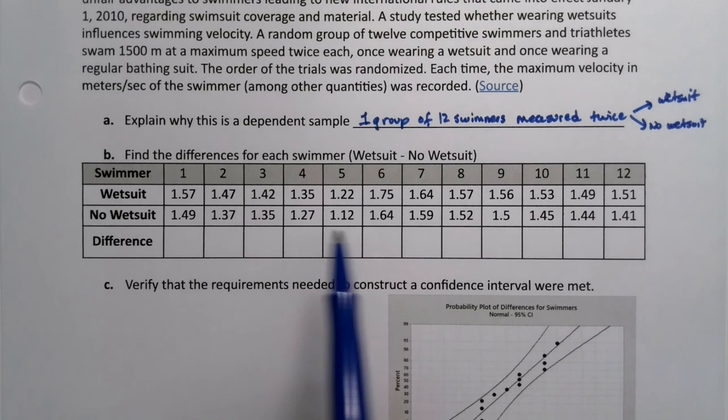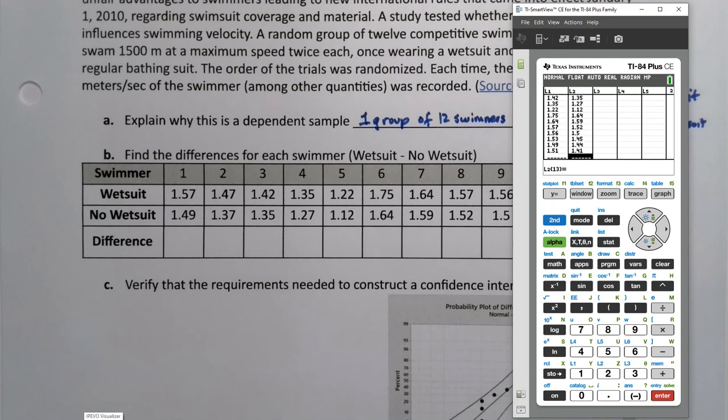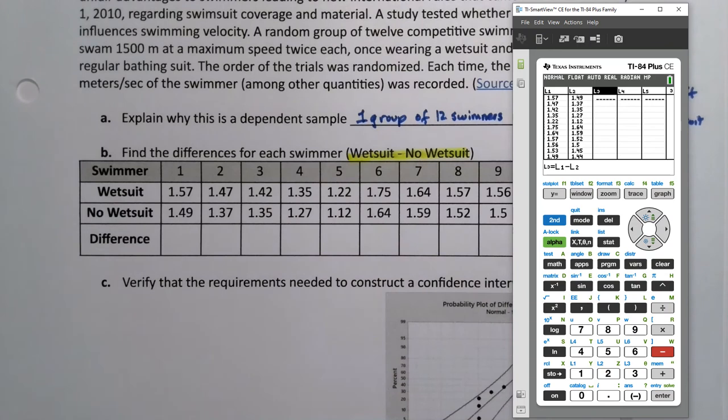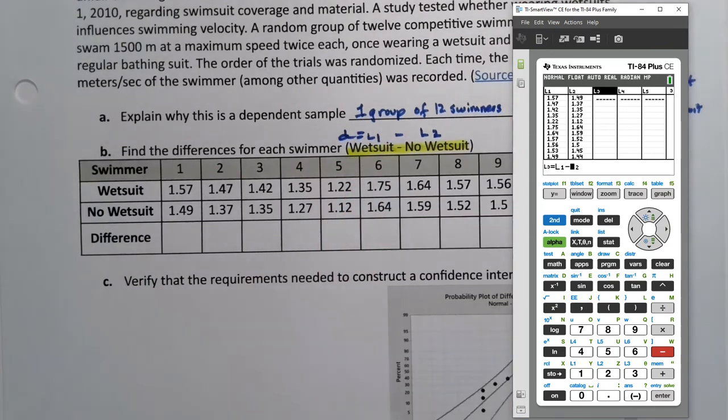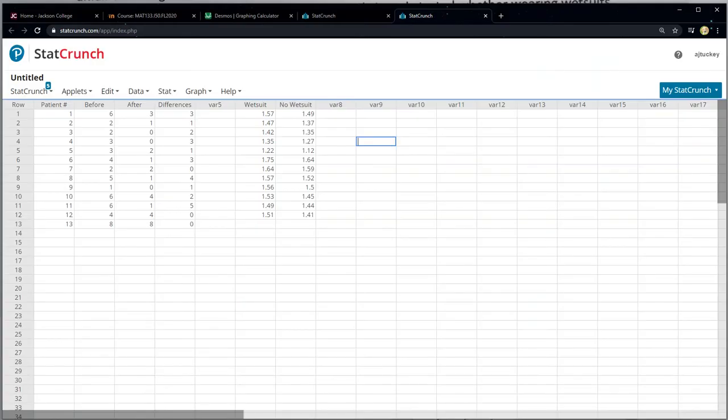So we're going to find the differences for each swimmer just as we did before. So I already have these typed into the calculator. So if you're using the calculator, you can type your wetsuits in L1, your no wetsuits in L2, go over to column three, go up to the L3, and type L1 minus L2 because I said that I want it to be wetsuit minus no wetsuit. I say it right here. Since we're doing wetsuit minus no wetsuit, that's L1 minus L2 right there. Those are the differences.